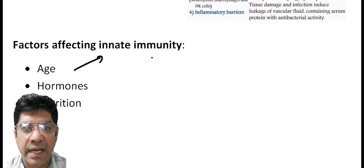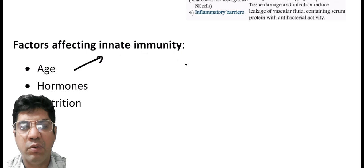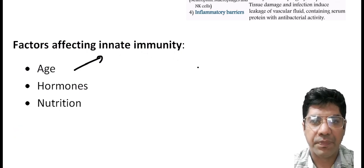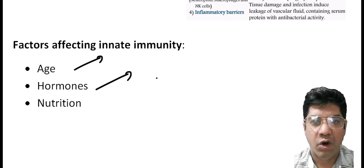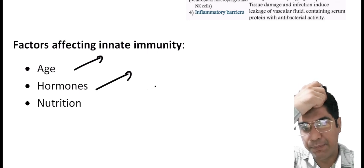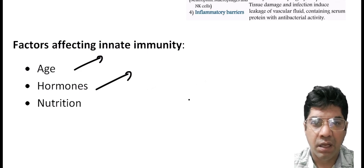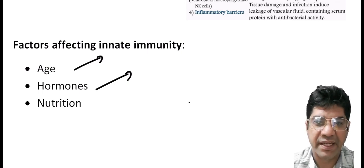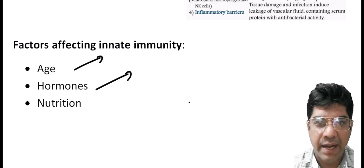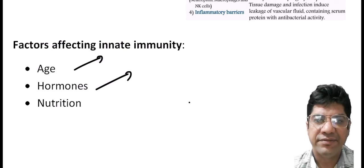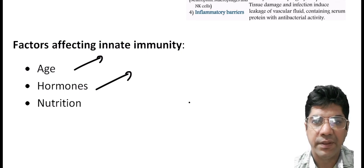The first factor is age — the very young and elderly are generally more susceptible to infectious diseases. The fetus in utero is protected from maternal infection by the placental barrier, but sometimes pathogens can cross the barrier and lead to fetal infection. The second factor is hormones — hormones can affect susceptibility; for example, the onset of puberty can lead to spontaneous cure of infections. Some infections like poliomyelitis and chickenpox can be more severe in adults than in children due to hypersensitivity reactions.